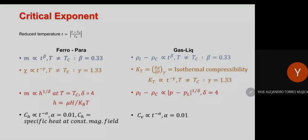This generalized homogeneous function is used in field theory for free energies. For a magnetic transition, if we put X = T (reduced temperature) and Y = H (reduced magnetic field), then the free energy satisfies F(lambda^A * T, lambda^B * H) = lambda * F(T, H). So the free energy is a generalized homogeneous function of reduced temperature and reduced magnetic field.